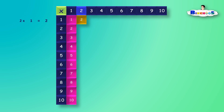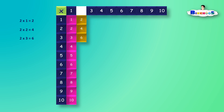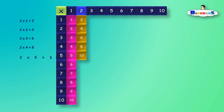2 times 1 is equal to 2. 2 times 2 is equal to 4. 2 times 3 is equal to 6. 2 times 4 is equal to 8. 2 times 5 is equal to 10.